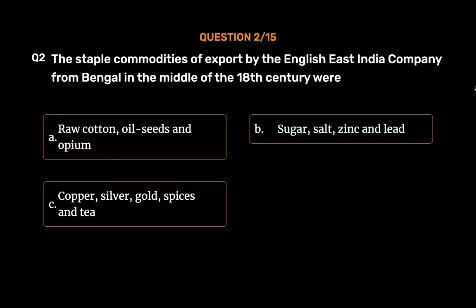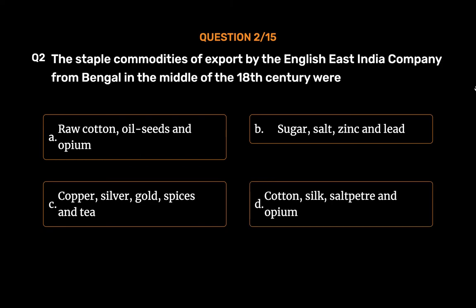Option C: Copper, silver, gold, spices and tea. Option D: Cotton, silk, saltpeter and opium. The correct answer is Option D: Cotton, silk, saltpeter and opium.